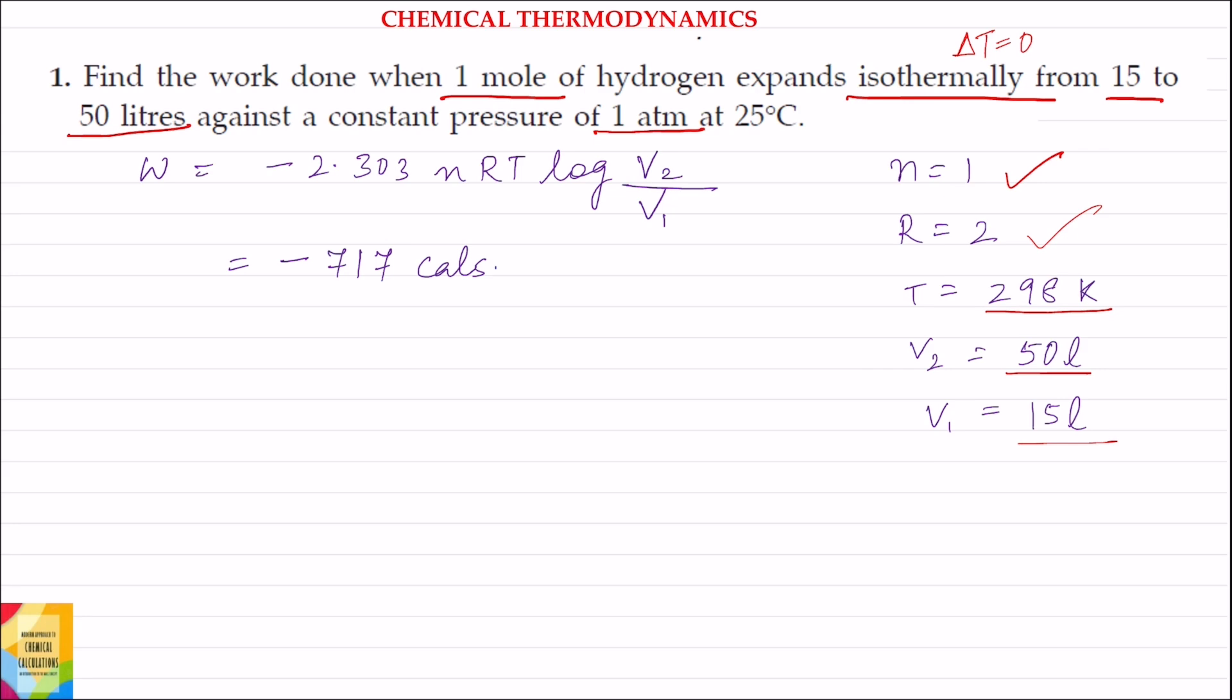Temperature in Kelvin, how to convert? Temperature in Kelvin is equal to temperature in degree centigrade plus 273. So 25 degree centigrade plus 273 gives temperature of 298 Kelvin.